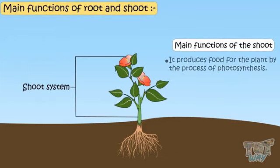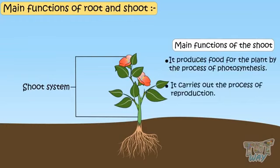The main function of shoot is to produce food for the plant by the process of photosynthesis and it carries out the process of reproduction too.